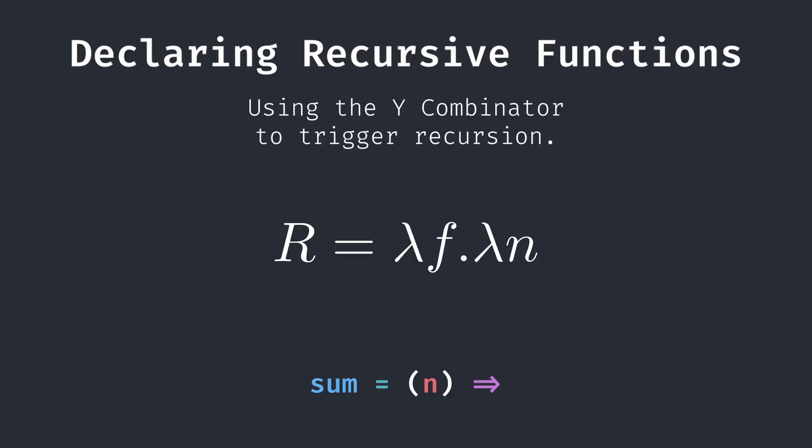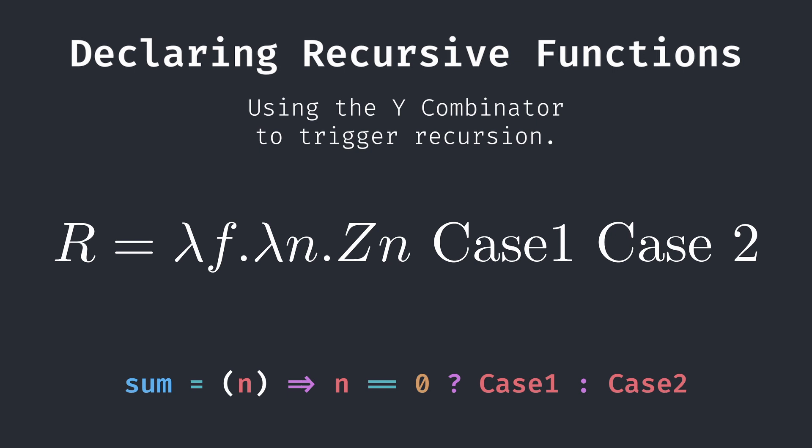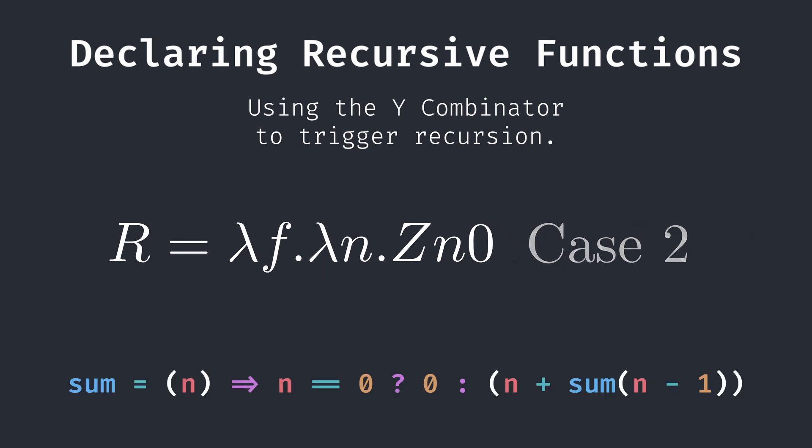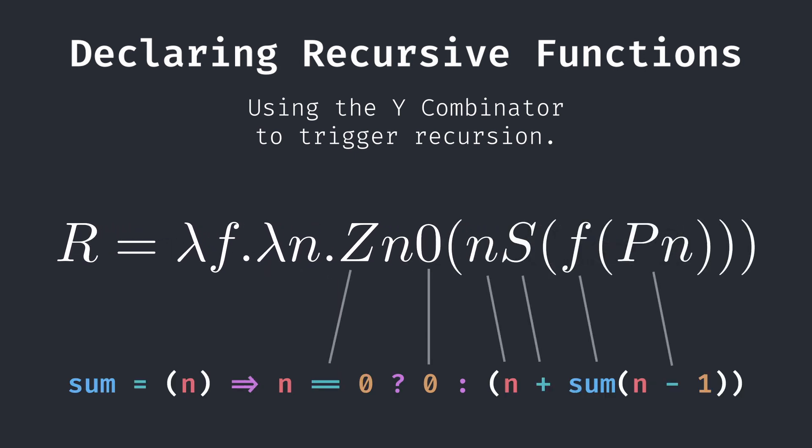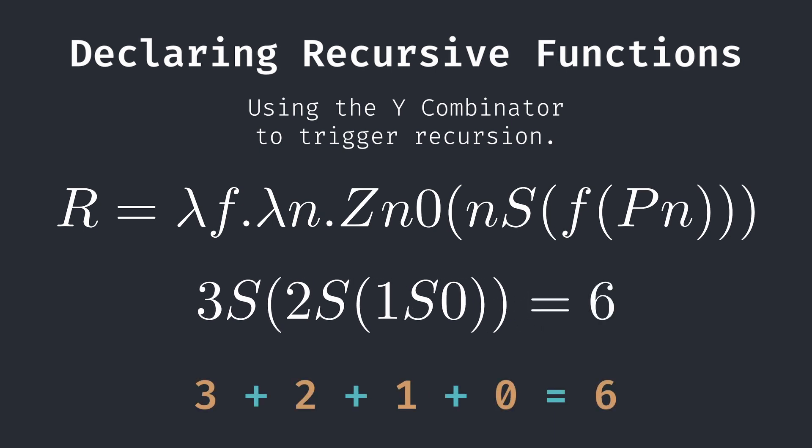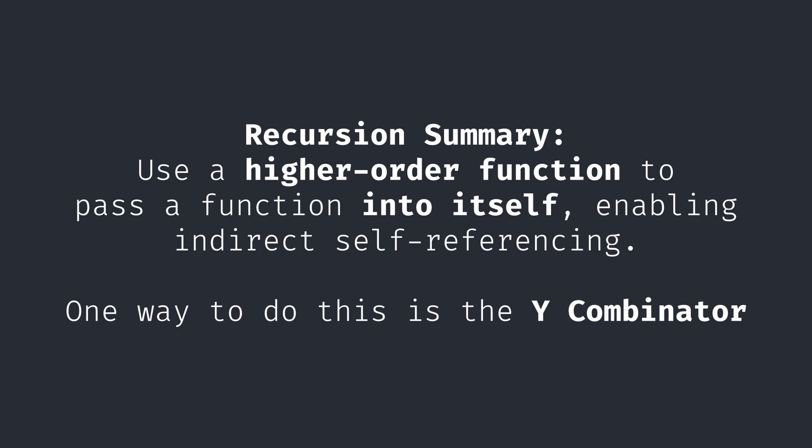In R, we need to first check if our current input N is 0, with our Z function. If it returns true, we will select the first outcome we give at 0. Otherwise, we will use successor to sum N with the result of the recursive called R, argument F, called on the predecessor of N. Now, with this definition, R of Y of R of 3 is simply equivalent to 3 plus Y of R of 2. And we can continue to expand this until we get to the base case. The final expression correctly reduces down to 6. Notice that we were able to bypass the limitations of self-referencing by simply passing the function into itself as an argument with a higher-order function, the Y Combinator. This effectively helps you self-reference and create recursion in Lambda Calculus, as well as any other language which doesn't natively support it.